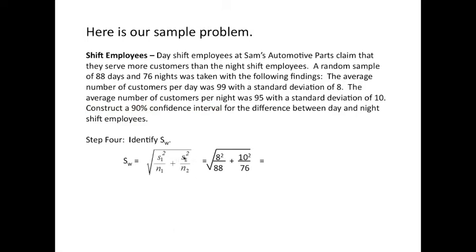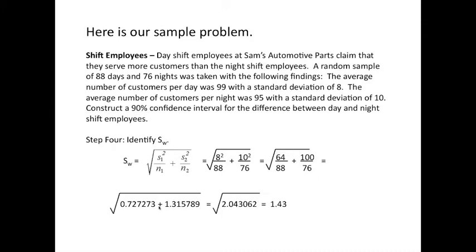Now, here's the fun part. We need to solve for this weighted standard deviation. So, we're going to plug s₁² and then we're going to plug s₂, which is 10 in. n₁ is 88, n₂ is 76. Now, in order to solve this, we would square the values first. Then, we would divide 64 by 88 and 100 by 76. We would next add those together, and we would take the square root. So, it's 1.43.